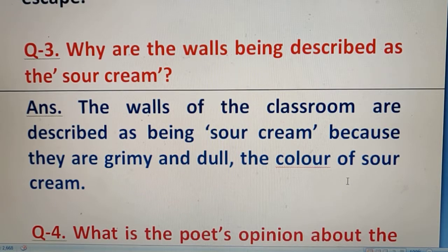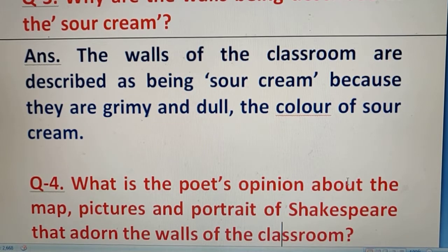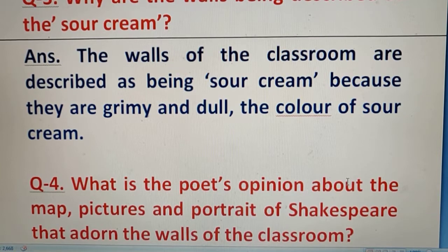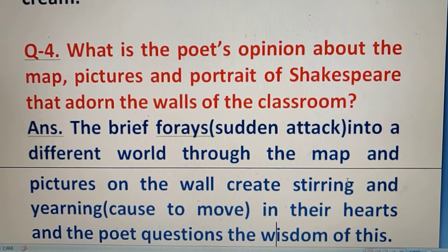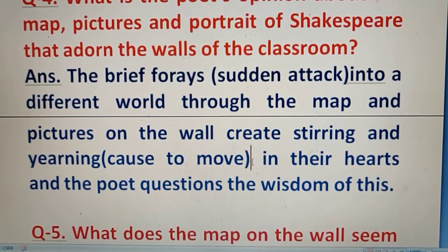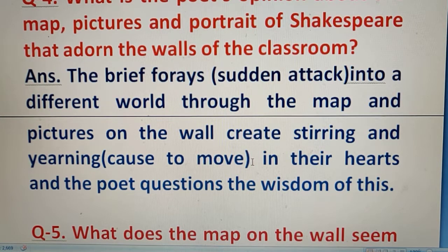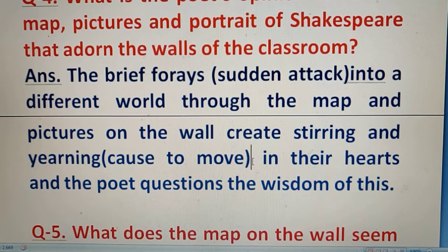Question number 4: What is the poet's opinion about the map, pictures, and portrait of Shakespeare that adorn the walls of the classroom? The poet describes that these things are not meant to be in the classroom. The poet questions the wisdom of placing them there because they have nothing to do with the actual life of the children.